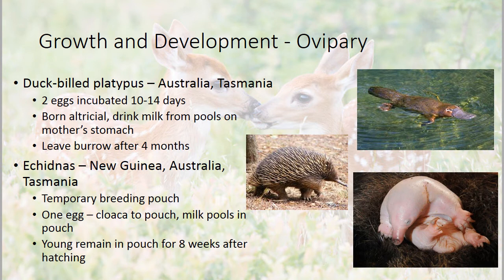Echidnas — found in New Guinea, Australia, and Tasmania — have a temporary breeding pouch. They have one egg, and as it exits the cloaca it goes directly into the pouch. Milk pools in the pouch, and when the babies hatch from the egg inside the pouch, they drink the milk from those pools. Young echidnas remain in the pouch for about eight weeks after hatching, and they look quite unusual when first born.